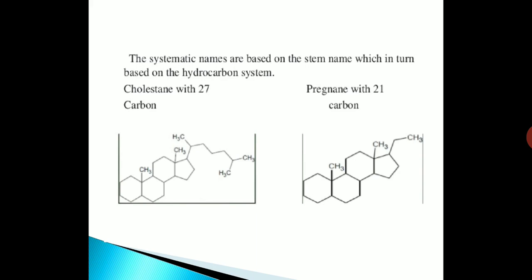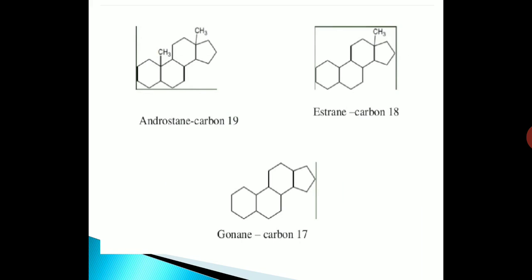The systematic names are based on the stem name, which in turn is based on the hydrocarbon system. For example, cholestane with 27 carbons and pregnane with 21 carbons; androstane with 19 carbons; estrane with 18 carbons; and gonane with 17 carbons.